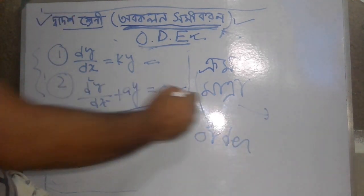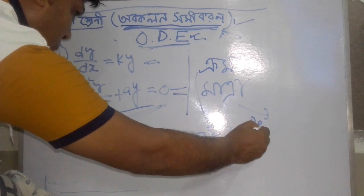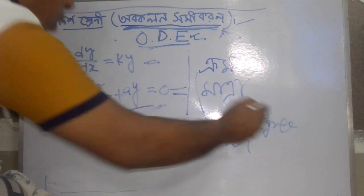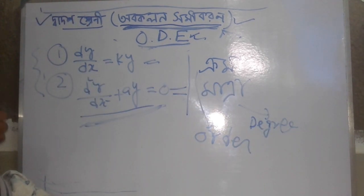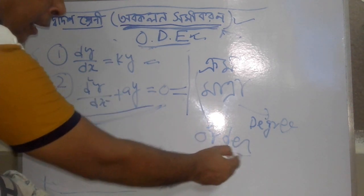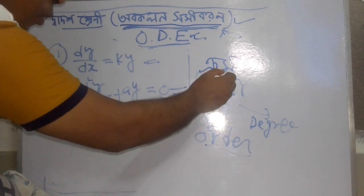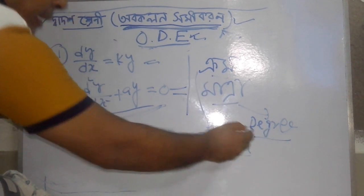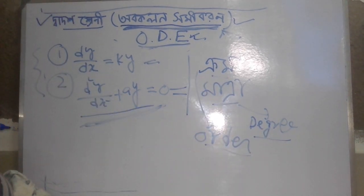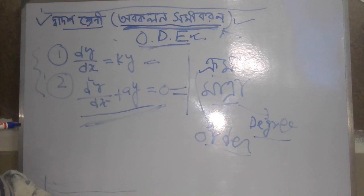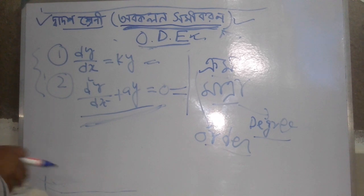Krom is called Order. And Matra is called Degree. Krom is Order and Matra is Degree. Remember, Krom and Matra are Order and Degree. We will explain this to you.